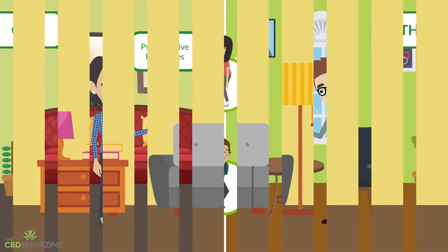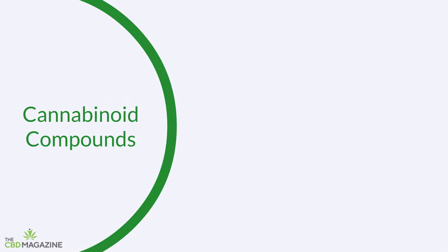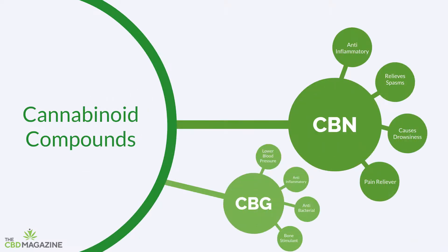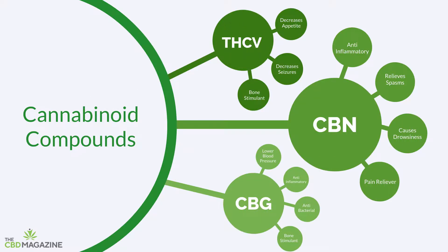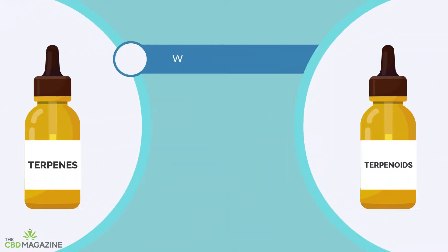Although we mainly hear about THC and CBD in mainstream media, cannabinoid compounds like CBN, CBG, or THCV also show interesting health properties. Other important components in cannabis, such as terpenes and terpenoids, have been found to work closely with THC to provide unique therapeutic effects.